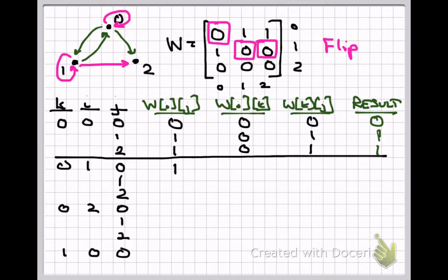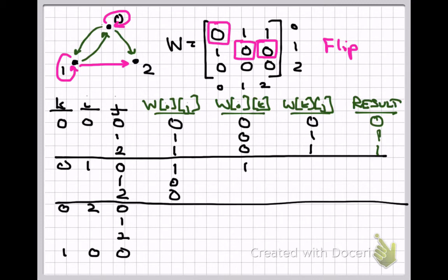Now we increment i to 1. In the fourth line, w[i][j] = w[1][0], the second row, first column, which is 1. Since this bit is 1, OR-ing with anything gives 1. For completeness: w[i][k] = w[1][0] = 1, and w[k][j] = w[0][0] = 0. The end result is 1.